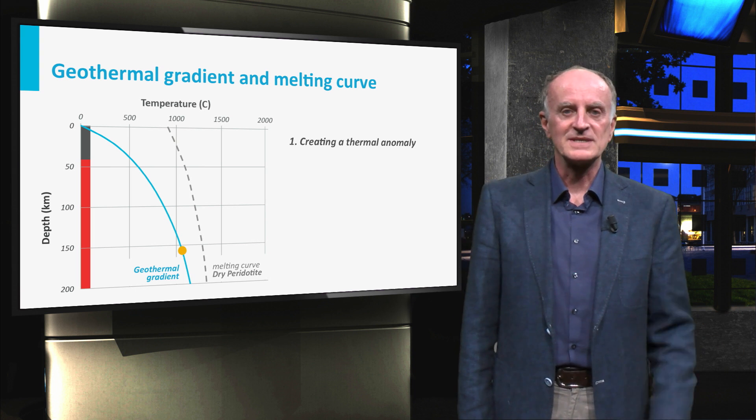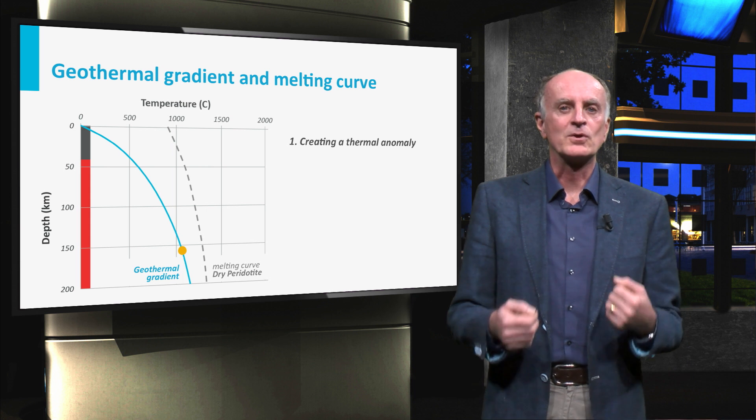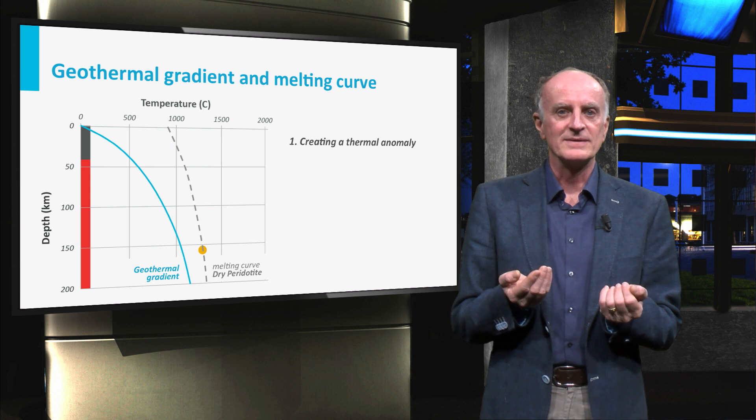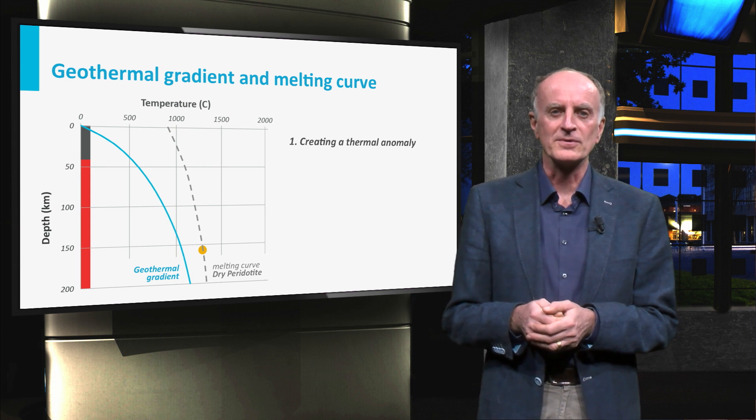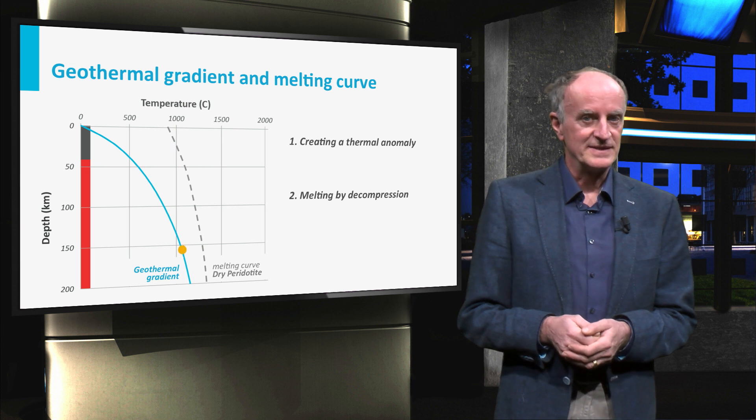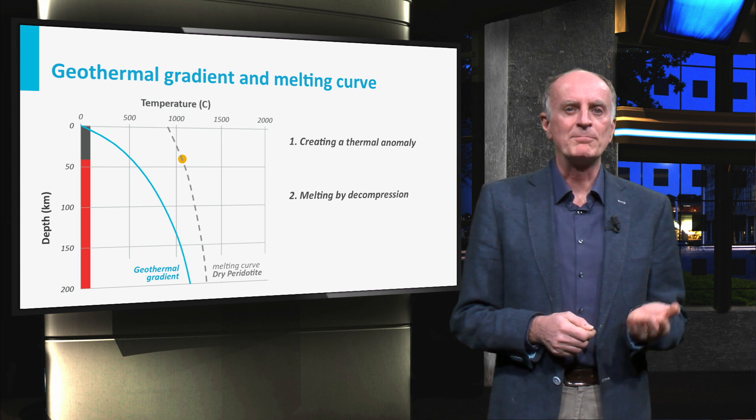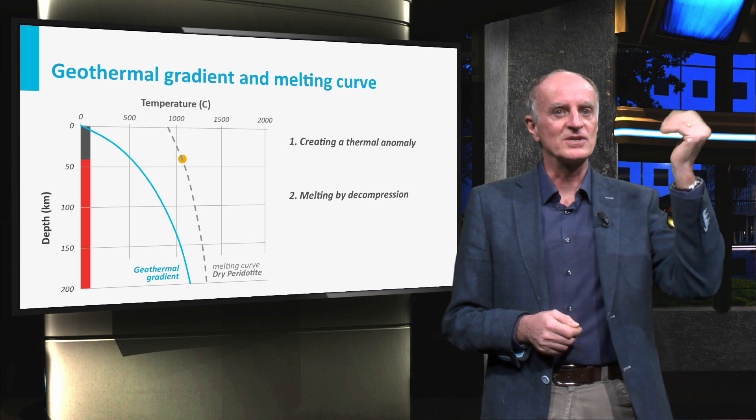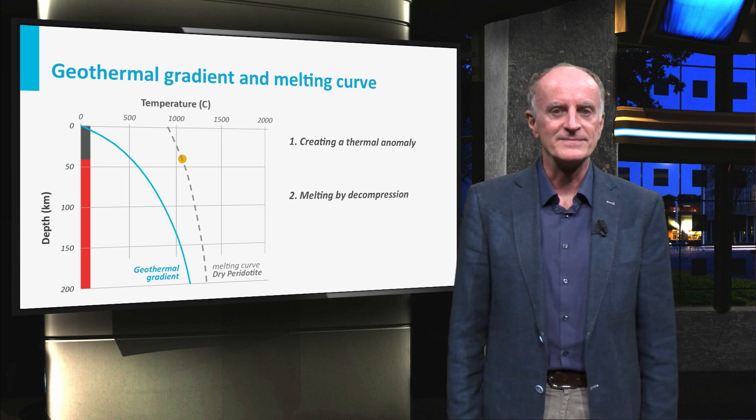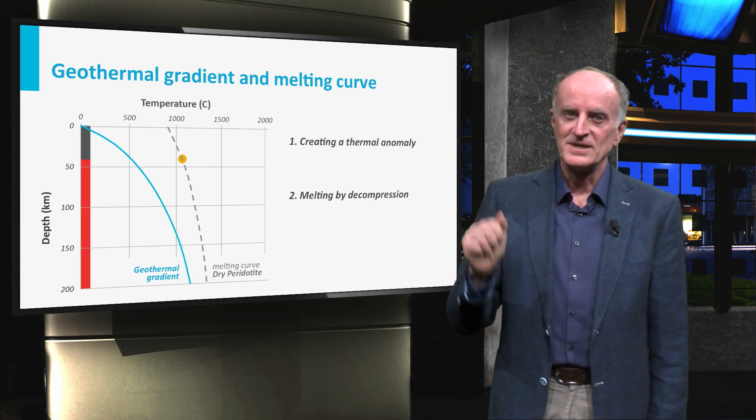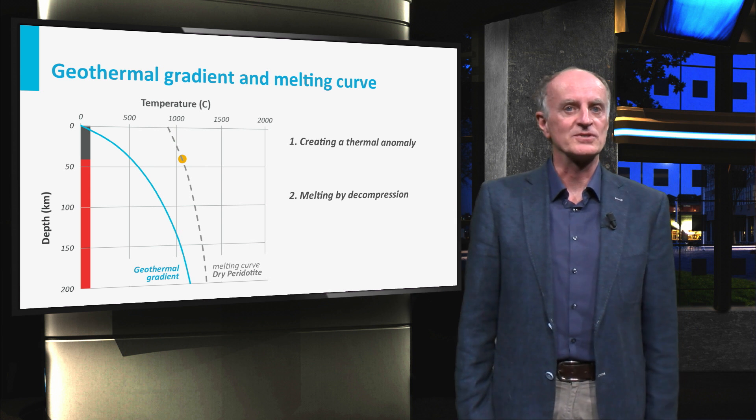The first process is simply heating. We call this creating a thermal anomaly. This is feasible, but physically very difficult in the deep Earth. A second possibility is to move the rocks upward. This is potentially a good mechanism, but movements of many kilometers are needed.